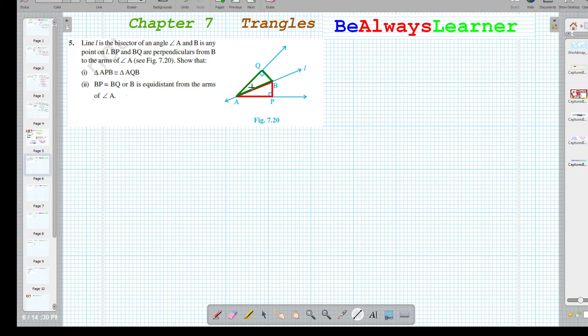We want to prove these two are congruent triangles and BP and BQ are equal, or that B is equidistant from the arms of angle A. If we can prove the first identity, then we can prove the second one also. So the solution starts.